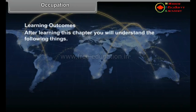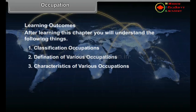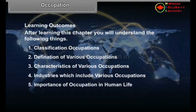Learning Outcomes: After learning this lesson, you will understand the following things — 1. Classification of occupations, 2. Definition of various occupations, 3. Characteristics of various occupations, 4. Industries which include various occupations, 5. Importance of occupations in human life.